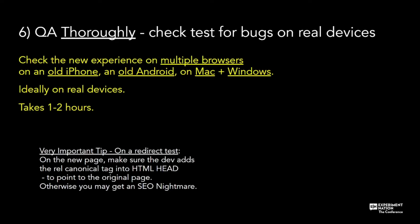Number six of seven: QA — quality assurance. I recommend spending a lot of effort on QA. It's so important. We need to QA thoroughly because there will be bugs. Devs can't get 100% of bugs — they look at things differently and might not be used to testing the experience on so many devices. So get real devices — it doesn't cost much. It will probably take you one to two hours to do a very thorough QA. You can create your own checklist so you're not missing any steps.